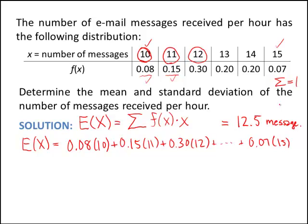So maybe this hour 12, next hour 13, the next hour 10, the next hour 15. If we took all those values and actually averaged them on the long run, we would get 12.5. So again, the mean is a long run average.